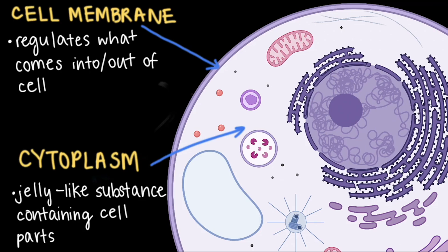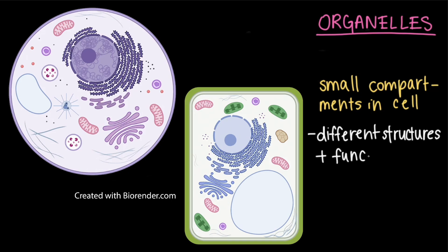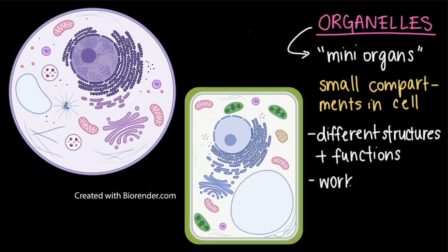Some of the parts contained within the cytoplasm are called organelles. Organelles are small compartments in the cell that have different structures and functions. The word organelle basically means mini-organ. And just like how our bodies are made up of different organs that work together to help us stay alive, cells contain different organelles that work together to get things done inside the cell.